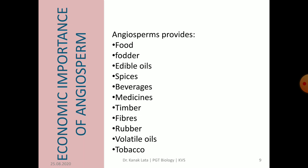Many angiospermic trees, particularly dicotyledons, yield valuable hard wood which is used as timber. For example, teak wood, sal wood, oak wood, sheesham wood and sandalwood. Fibres of different qualities are also obtained from various species of flowering plants. There is a long list of useful articles like paper, rubber, volatile oils, tobacco, etc., which we obtain from angiospermic plants.